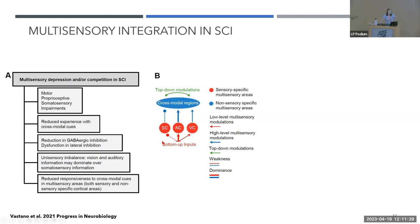For example, in a complete lesion, somatosensory information is perceived as weak while auditory information can dominate. There is evidence of exaggerated startle responses in SCI, and that SCI individuals process salient auditory information — such as the sound of a wheelchair — faster than healthy controls. This information is basically unbalanced and reaches sensory-specific and cross-modal regions differently than in healthy controls. There is also very little literature on how attention deficits in SCI could affect multi-sensory integration.